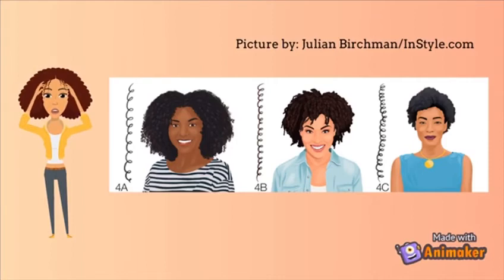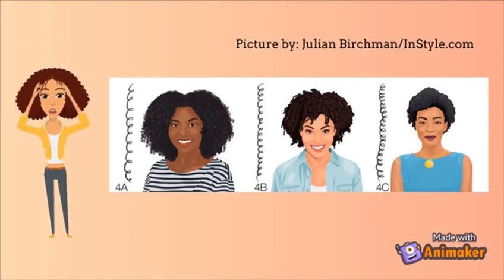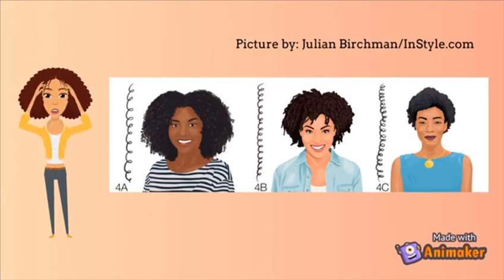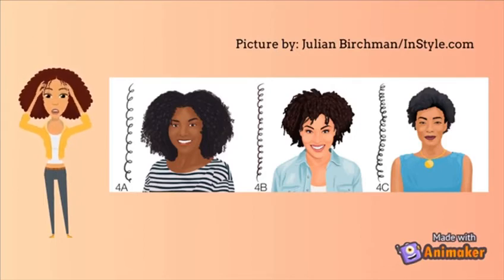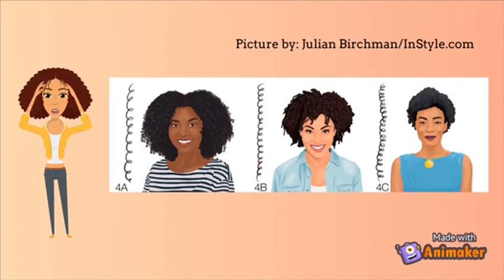Type 4c hair is the tightest of the tight, and you normally don't see a defined curl pattern because it's so packed with zigzag-shaped coils. This hair is deemed the least manageable, but that's only true if you don't know what you're doing — and that's no shade to anybody. Curly hair is a hit-or-miss, trial-and-error thing for everyone regardless of curl type. However, because 4c hair is so tightly coiled, it is the easiest to break and it takes a longer time to find products and a routine that pairs well with it.